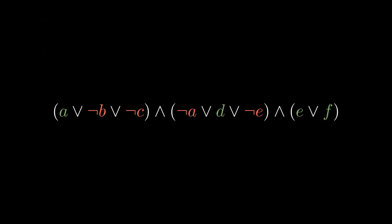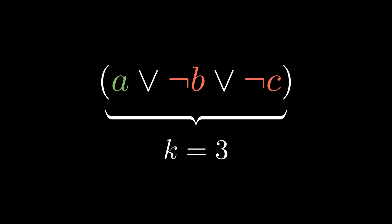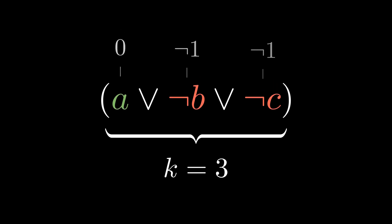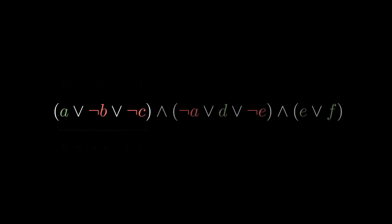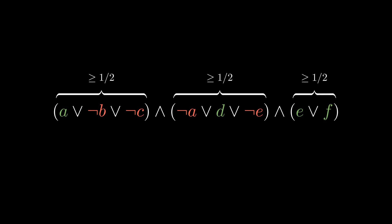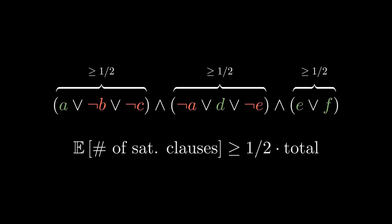Looking at the algorithm more formally, RAND-SAT doesn't satisfy a clause of k-literals if and only if all of them are set to false, the probability of which is 1 over 2 to the k. Therefore, the probability that it is satisfied is 1 minus 1 over 2 to the k. Since each clause contains at least one literal, it is satisfied with the probability of at least one-half, meaning the algorithm will, in expectation, satisfy at least one-half of the clauses.